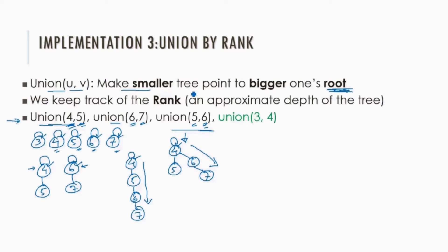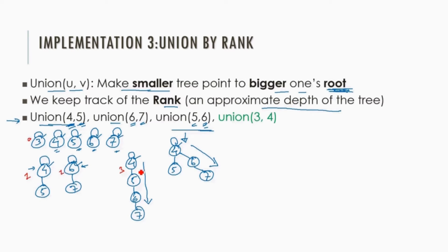In addition to connecting roots, we consider another point: we make a smaller tree point to the bigger one's root. To define smaller and bigger trees, we use the term rank. Rank represents an approximate depth of the tree — more specifically, the maximum path length. For example: the rank of a singleton node is 0, the rank of a two-level tree is 1, and so on.